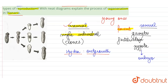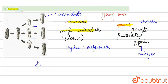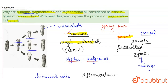In planaria, if we cut the animal into multiple pieces, all three pieces eventually grow into new individuals. This type of reproduction is possible because of specialized cells present in the animal's body. When the body is cut into pieces, these cells in each piece have the ability to differentiate and develop into different kinds of cells and tissues required in the animal's body.